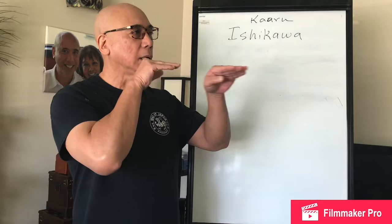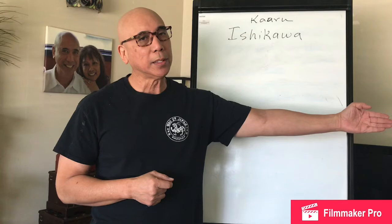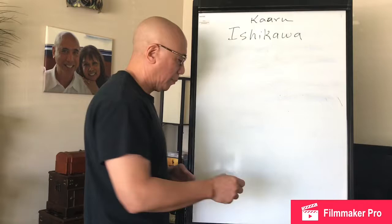In Lean Six Sigma, the Ishikawa fishbone diagram is used to find the root cause of a situation. That means if you look for a root cause, you're going into something called cause and effect. They use it to reverse engineer a situation and find out where it starts.